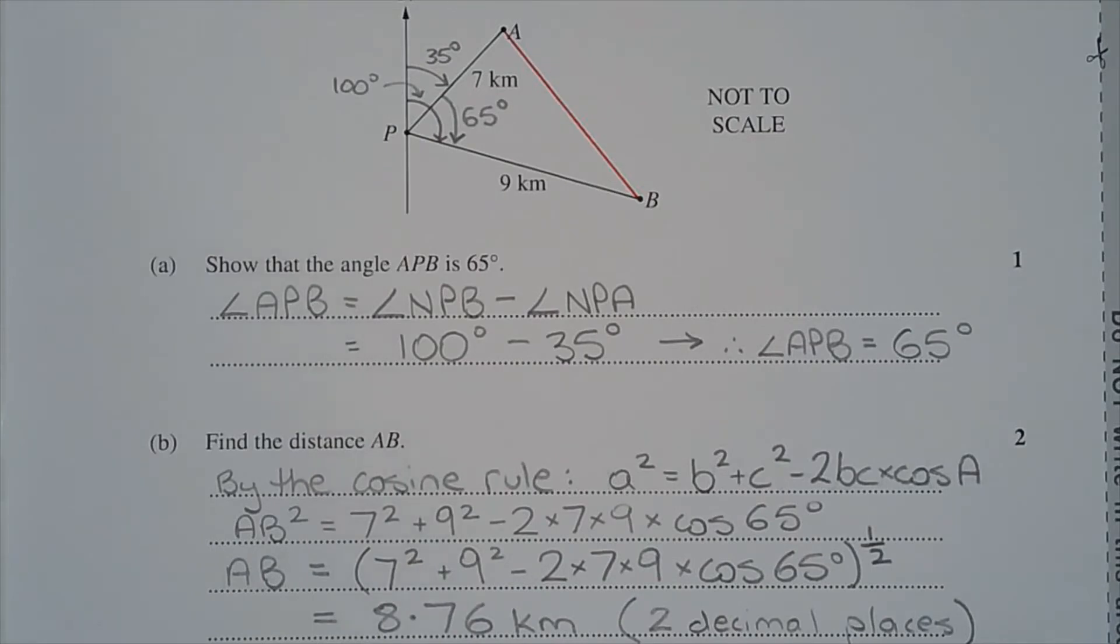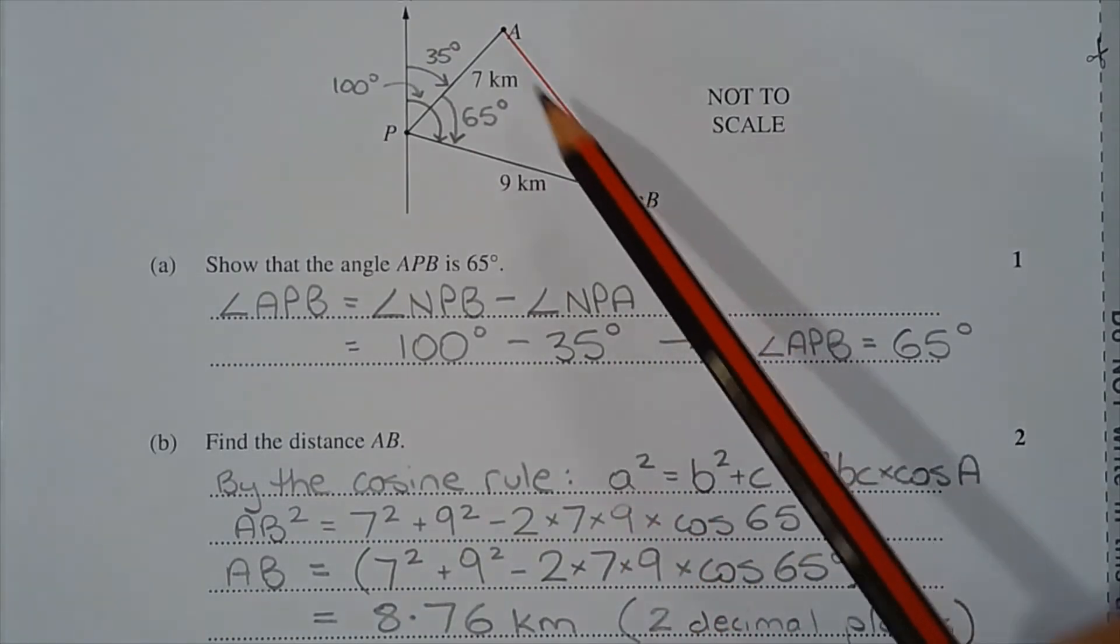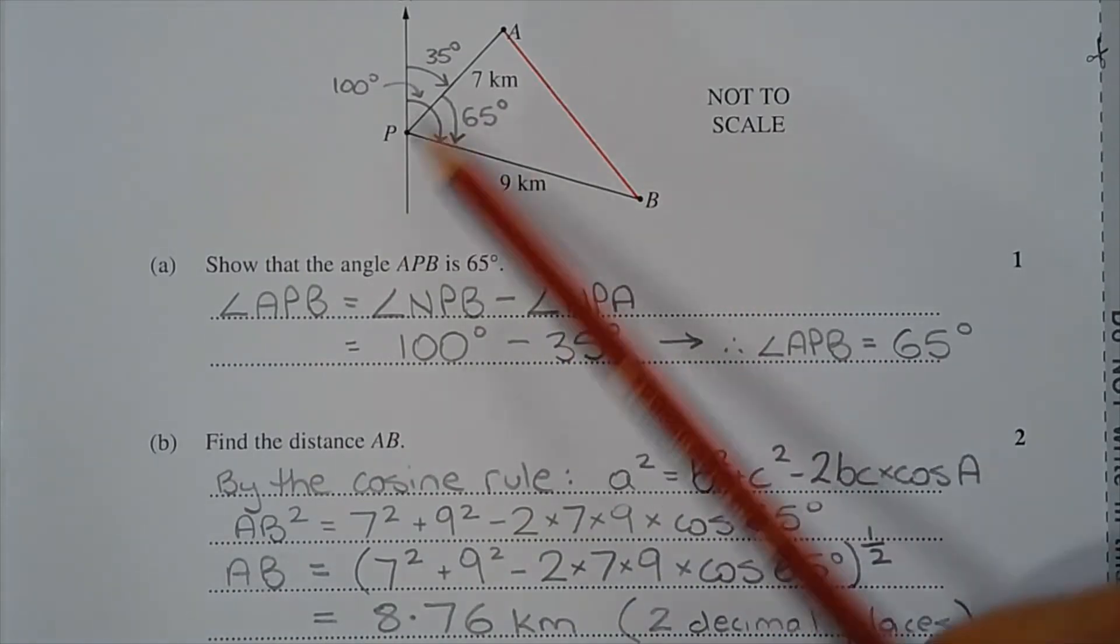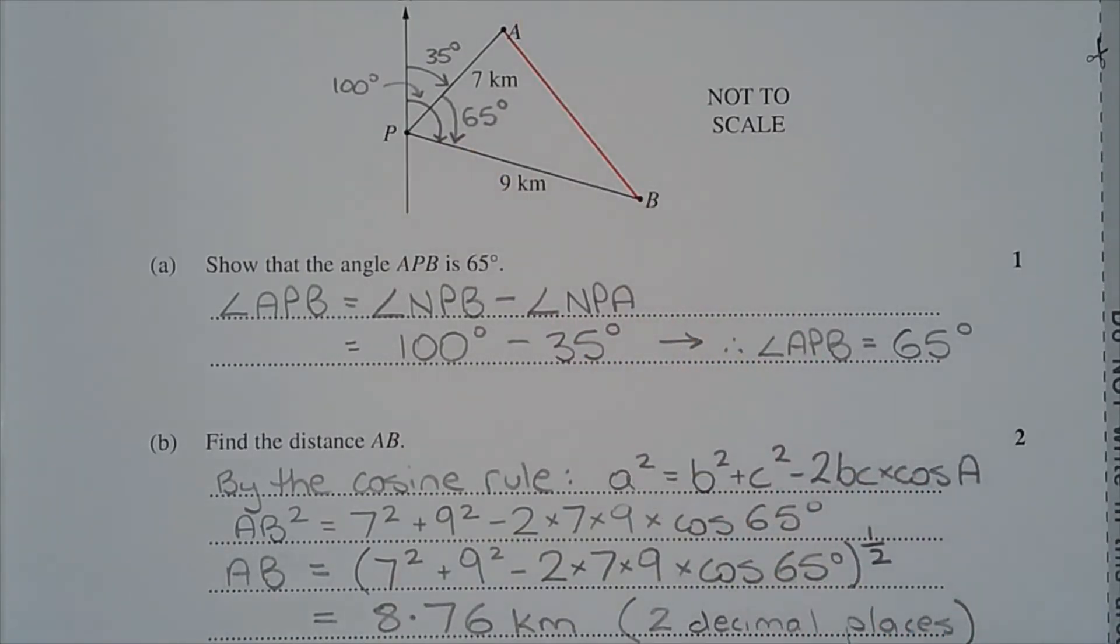Because there are two known sides and an included angle, the cosine rule can be applied to find the length of the remaining side, AB. So by the cosine rule, A squared equals B squared plus C squared minus 2BC times cos A. A represents the angle here, 65 degrees. This lowercase A represents length or side AB. And B and C represent 7 and 9 kilometres, and it doesn't matter in which order. So AB squared is equal to 7 squared plus 9 squared minus 2 times 7 times 9 times cos 65 degrees.